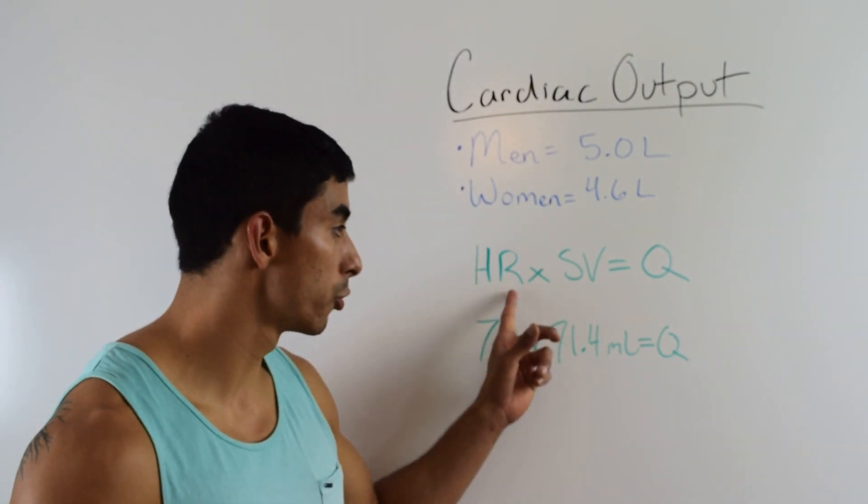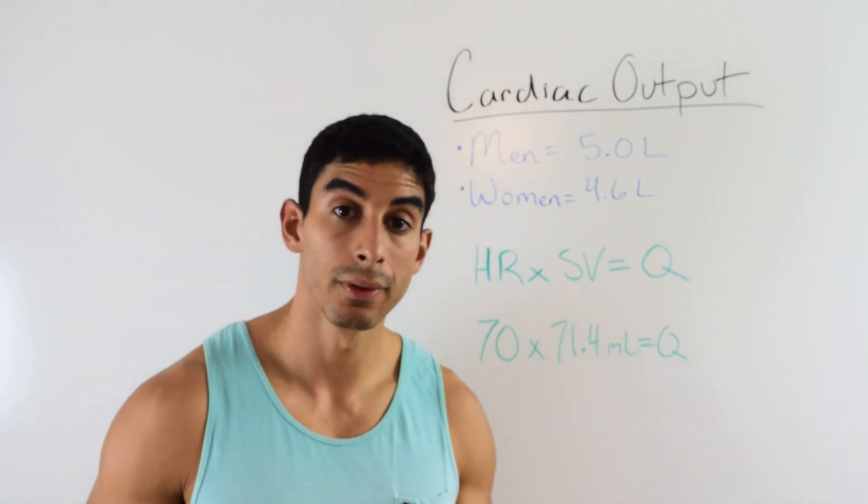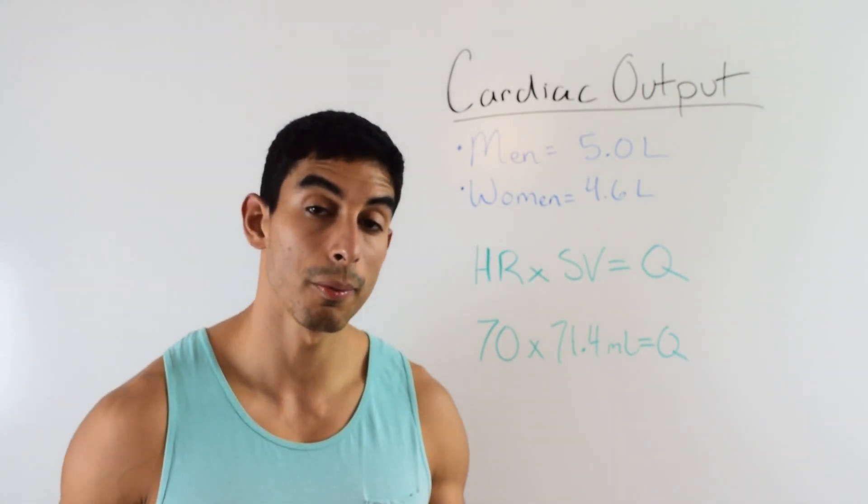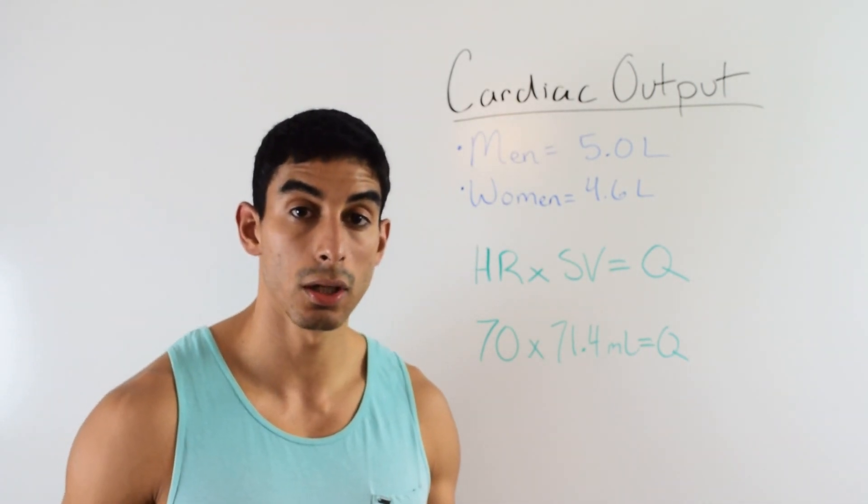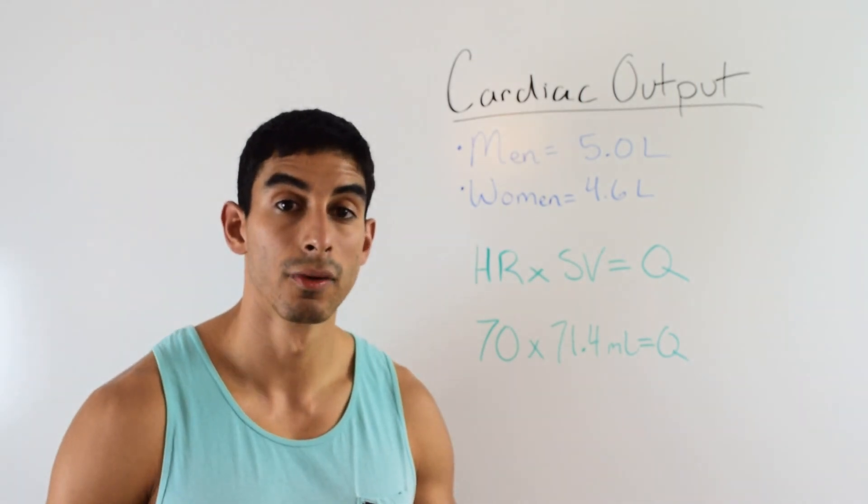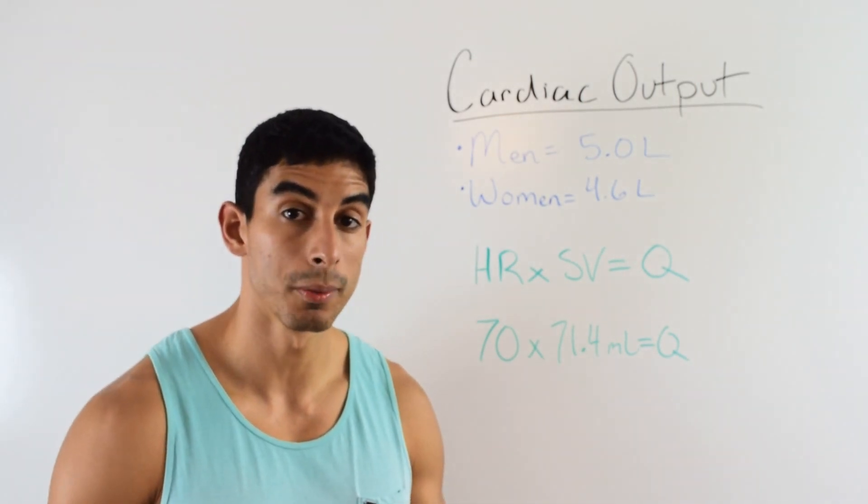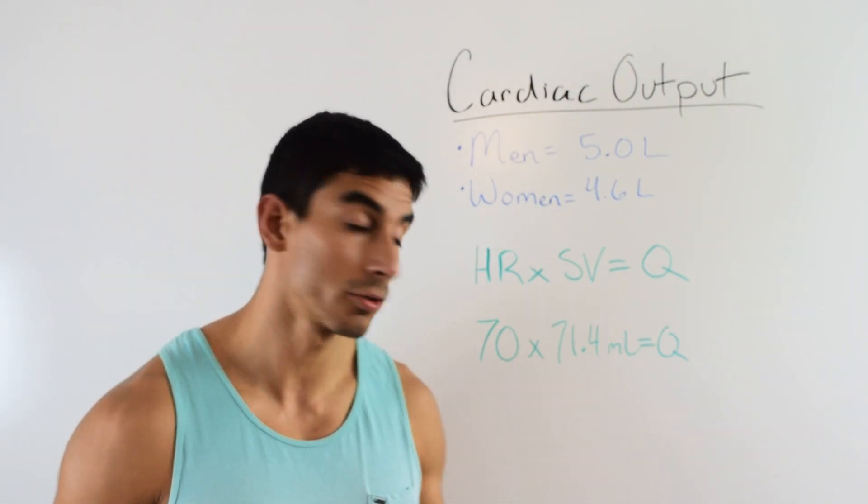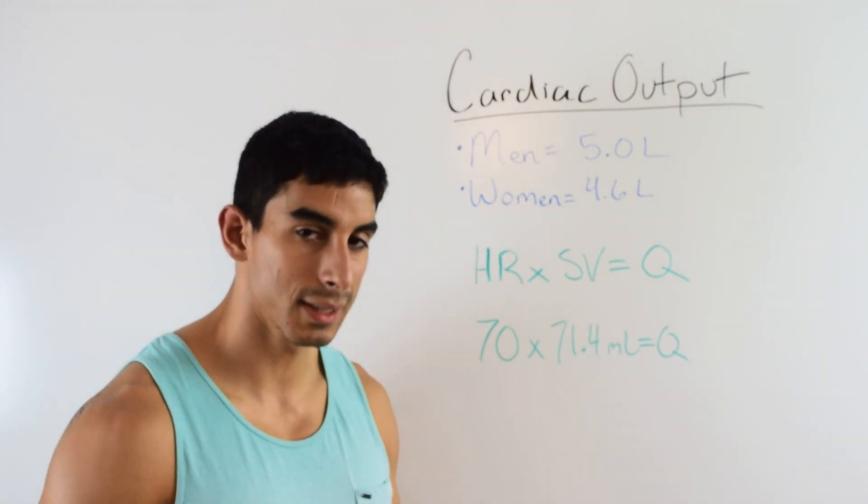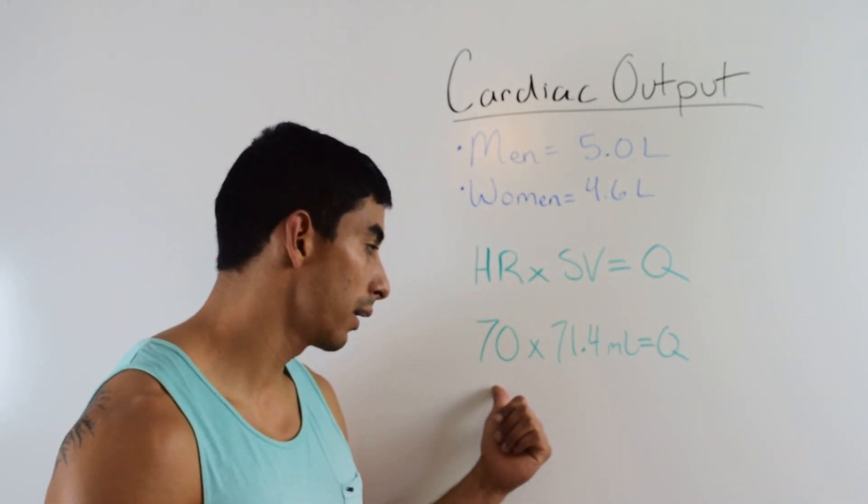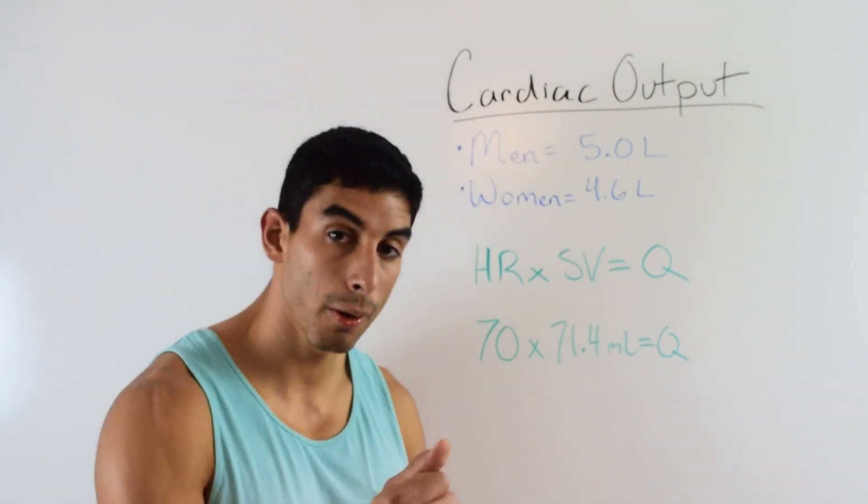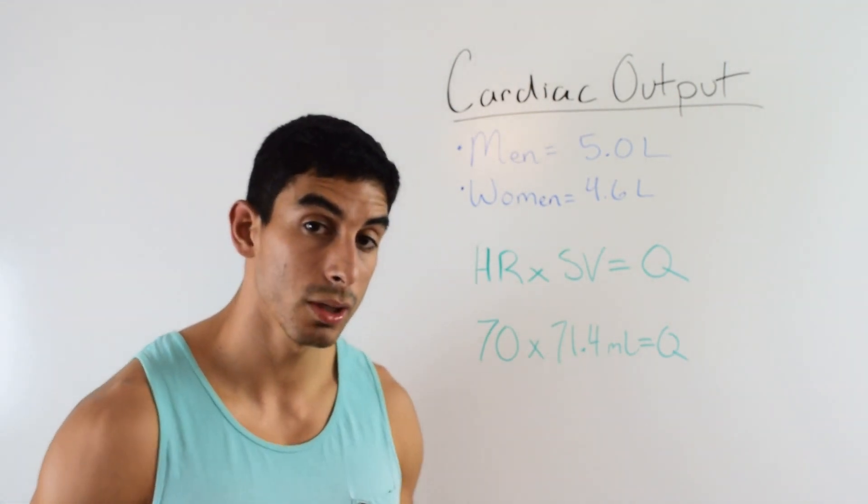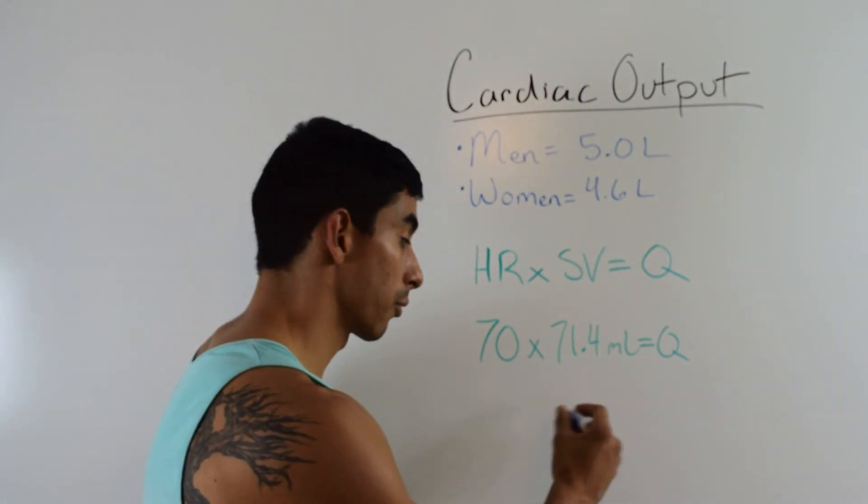So what you're going to need to be able to do is identify a heart rate and a stroke volume and make that calculation to calculate cardiac output. So if you see a question that says Bob has a heart rate of, let's say, 70 and his stroke volume is 71.4, what is his cardiac output? The way you do that is you just multiply the two together. So in my example, Bob has a heart rate of 70 and his stroke volume for each contraction of his heart is 71.4. So when you multiply those two together, you'll do 70 times 71.4.